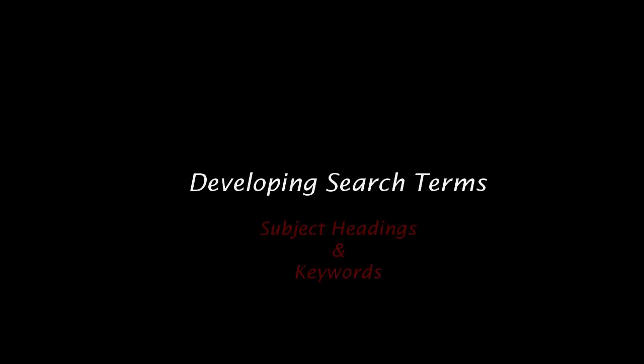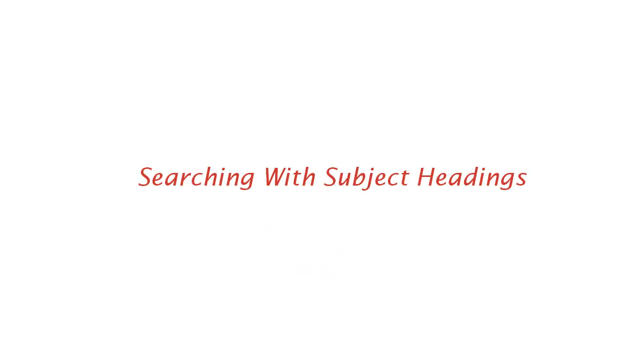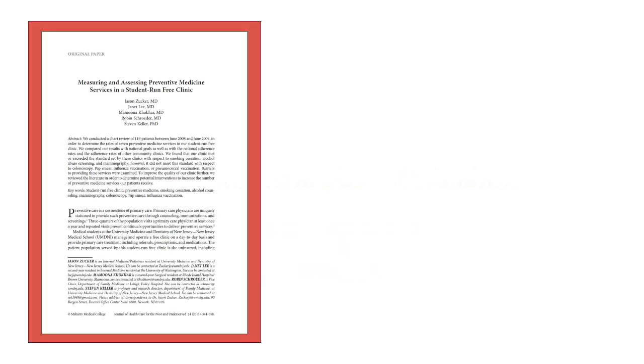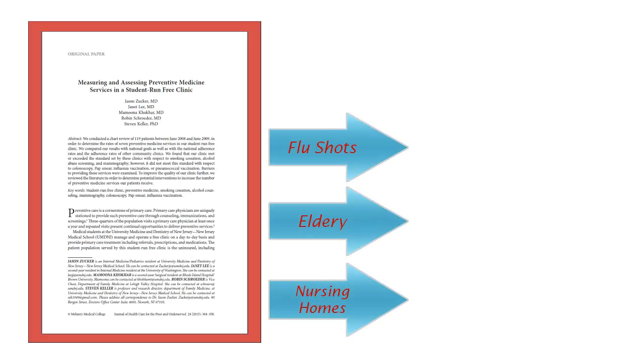Databases are designed to make your search more systematic. One of the ways they accomplish this is through their handling of search terms. Understanding the difference between subject headings and keywords will help make your search more effective. The process of creating database records requires indexers to identify the key concepts covered in a given article and include these terms in a searchable field for easy retrieval.